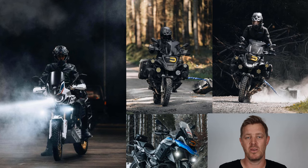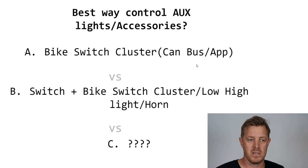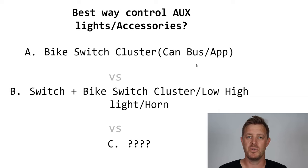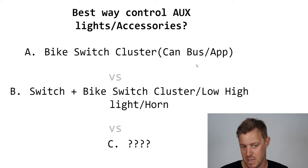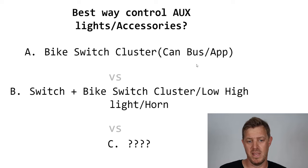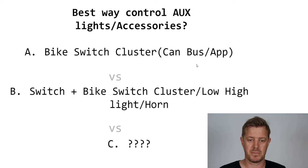The question came: how do I control these lights? There are a couple of options. The first option is a bike switch cluster — you can use the connections or buttons already on your bike to control the lights, using a CAN bus system. The second option is having a switch you control, but also some components on the bike get triggered when you do something, for example the horn, switching to high or low beam, or indicating. That's kind of a mix between the two.